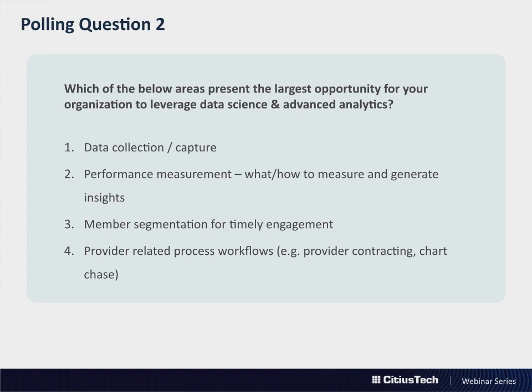We'll turn it back to Shatang and Jeff to discuss the results. Based on the first question, I would have guessed that data collection—because gathering the supplemental data was such a high priority—would be the highest one. And it is, but it is not as much skewed as the first answer was. In the first answer, supplemental data collection was 65% the priority, but here, data collection and performance management are almost equally given in the answers of what the audience is looking for.